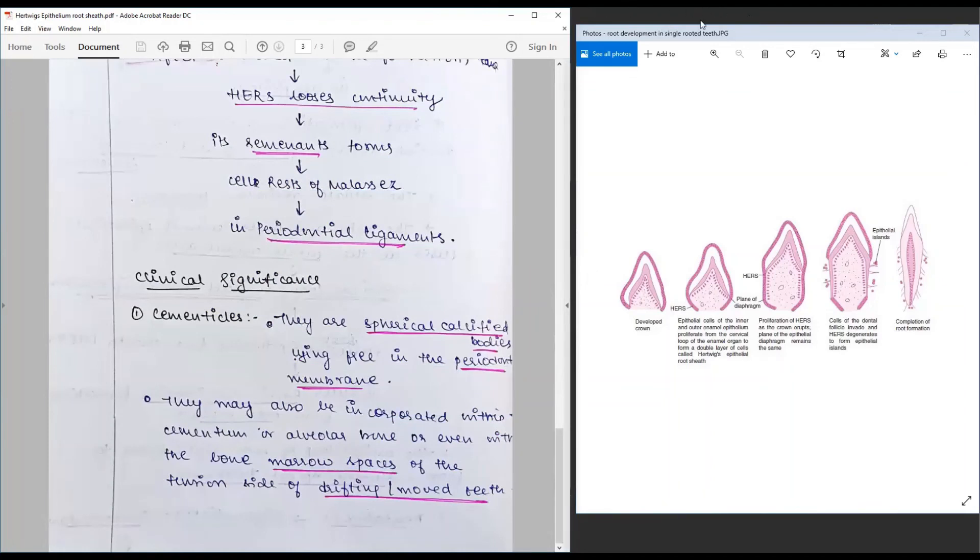But that, we come to the end of the discussion on Hertwig's epithelial root sheath and the cell rests of Malassez. Stay connected with this channel for more questions.